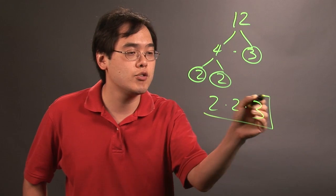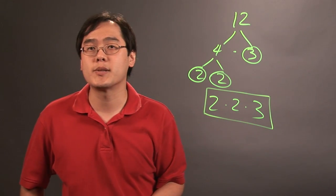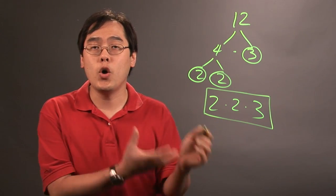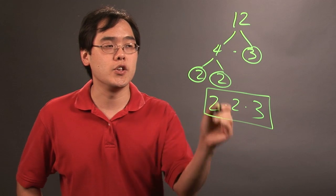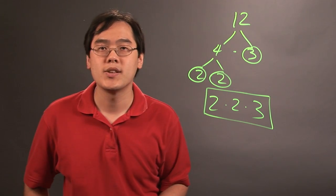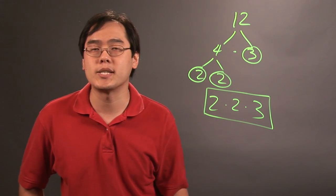So 12 can be rewritten as 2 times 2 times 3. As you can tell it's a product of primes, and you will always get to this kind of result if you use prime factorization. I'm Jimmy Chang and that's how to write a number as a product of primes.